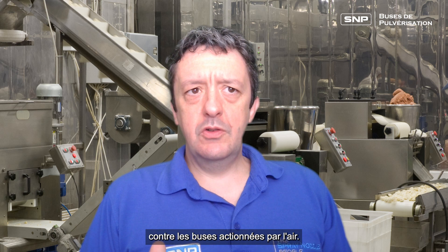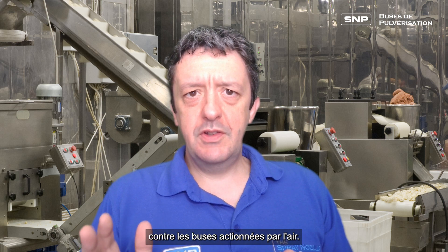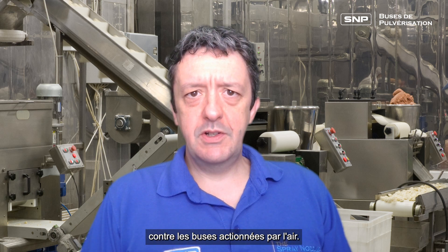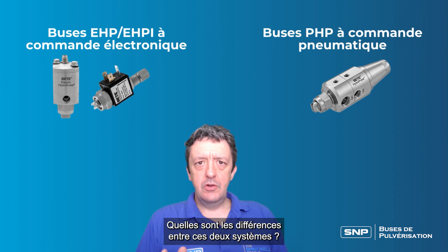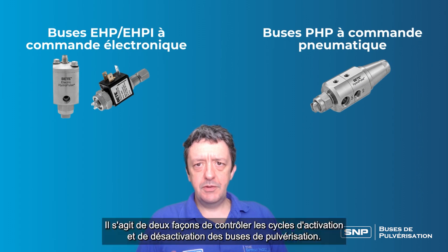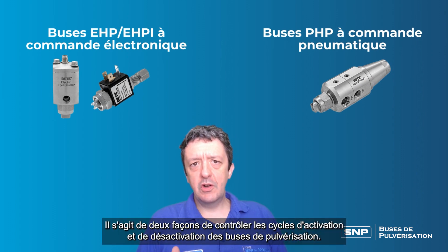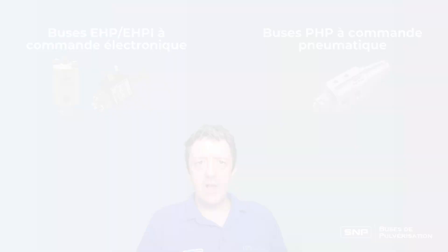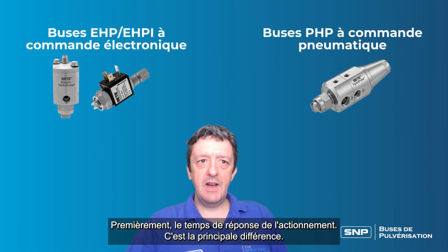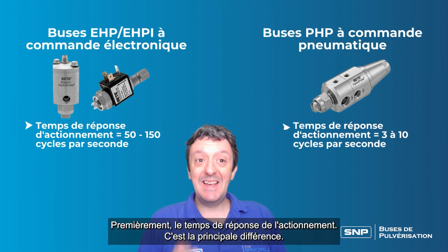Electronically actuated nozzles versus air actuated nozzles — so what are the differences between these two systems? These are two ways of controlling the on-off cycles of spray nozzles. The actuation response time is the big key difference.